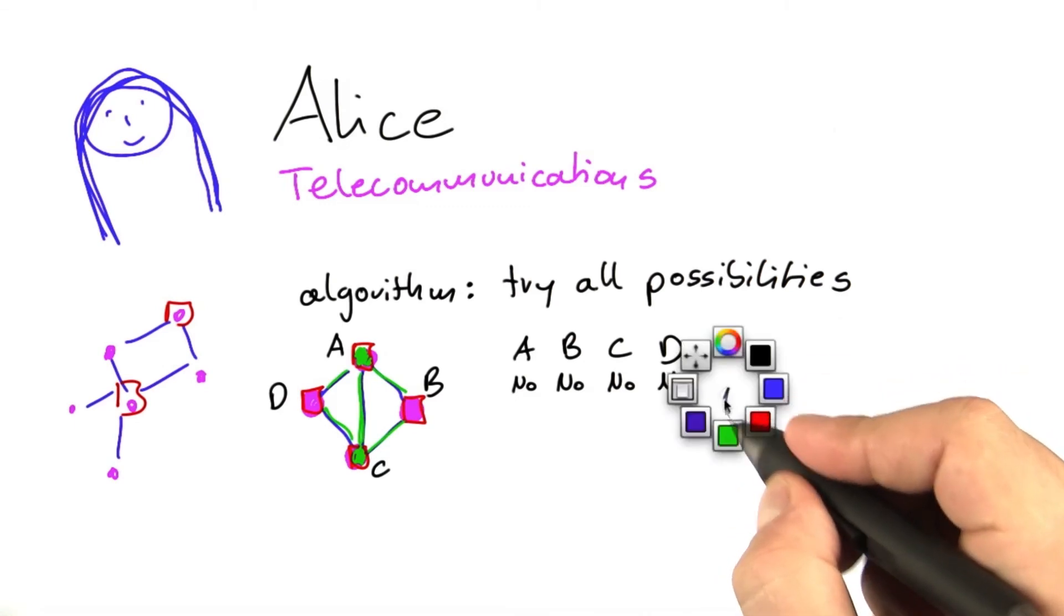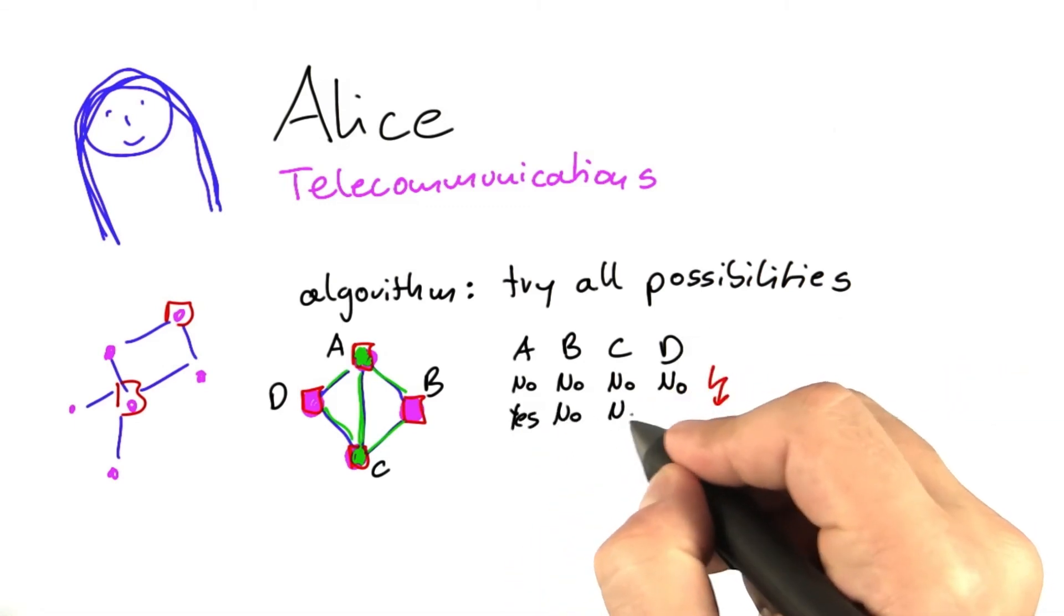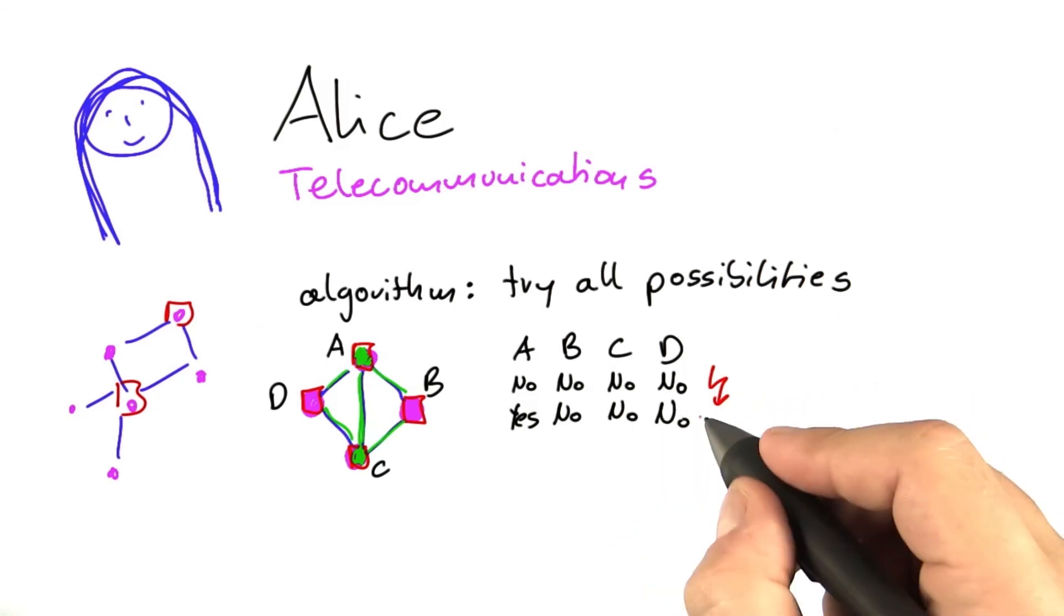which would of course not be a valid solution. It could try installing just a device at A, which again would not be a valid solution, and so on.